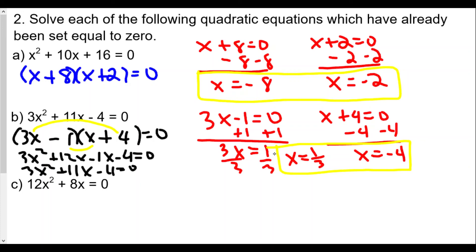Finally for C, here we're going to actually take the greatest common factor. It's always the one thing to do if you can. The greatest common factor here is 4x, leaving us with 3x plus 2 equal to 0. It's okay to have a single term as a factor.